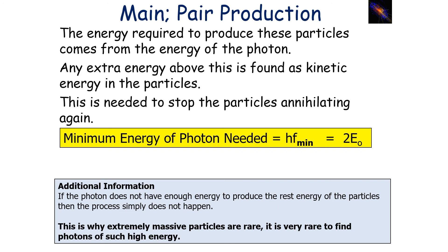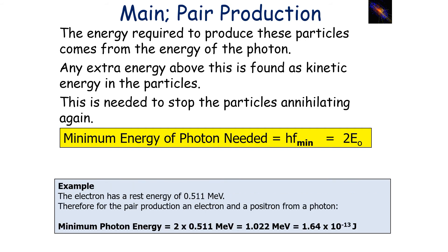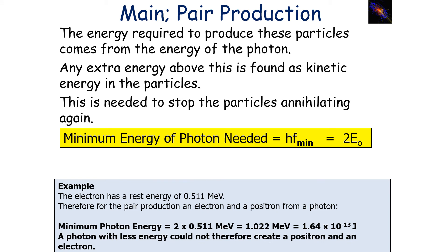If the photon does not have enough energy to produce the rest energy of the particles, the process simply doesn't happen. This is why extremely massive particles are rare in our universe — it's rare to find photons of such high energy. For example, the electron has a rest energy of 0.511 MeV. For pair production of an electron and positron, you need hf = 2E₀, so the minimum photon energy is 2 × 0.511 MeV = 1.022 MeV, which converts to 1.64 × 10⁻¹³ joules. A photon with less energy than this could not create a positron and an electron.